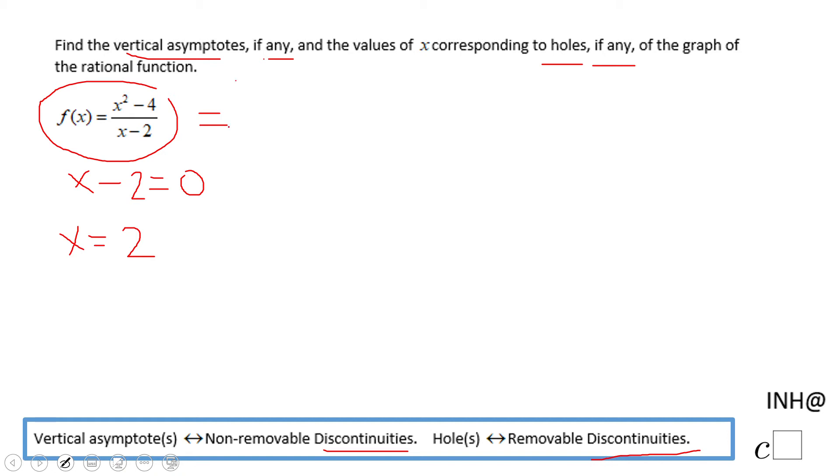And if you notice, x squared minus 4 is a difference of squares, which is x minus 2, x plus 2, divided by x minus 2.